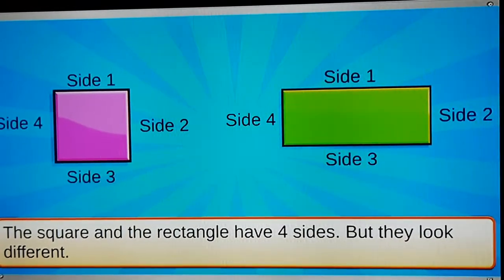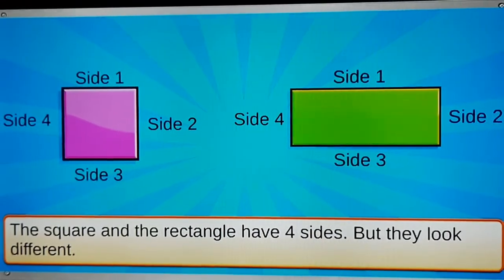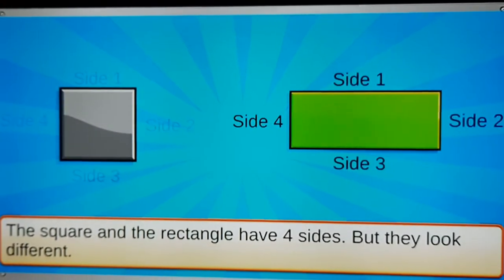The square and the rectangle have four sides, but they look different. Can you see why? All the sides of the square are the same, but the sides of a rectangle are not.